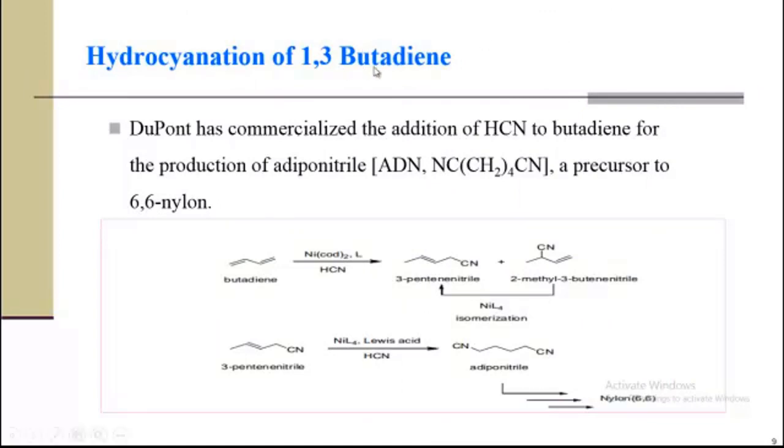Hydrocyanation of 1,3-butadiene to get adiponitrile, which is a precursor of nylon 6,6, a synthetic fiber. DuPont has commercialized the addition of HCN to butadiene for the production of adiponitrile. When butadiene is treated with HCN in the presence of nickel catalyst, then we will get 3-pentenenitrile or 2-methyl-3-butenenitrile.